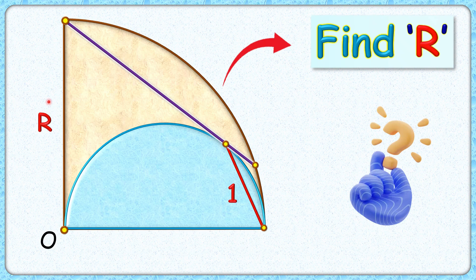This really amazing question gives us a quadrant and a semicircle. This purple line segment is tangent to the semicircle, and the length of this red line segment is given as one centimeter. The exciting part is: with this limited data, can you find the radius of this quadrant?